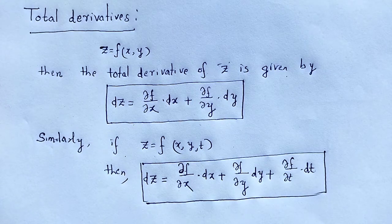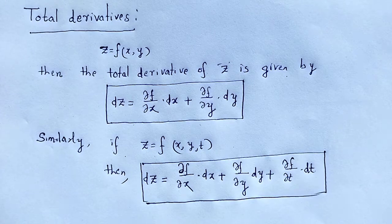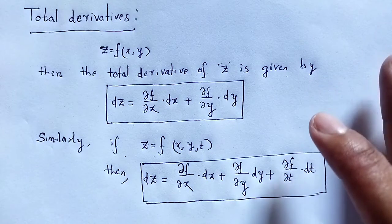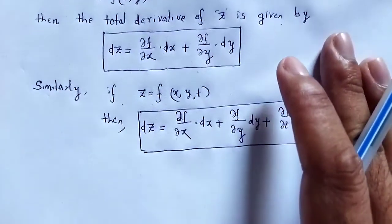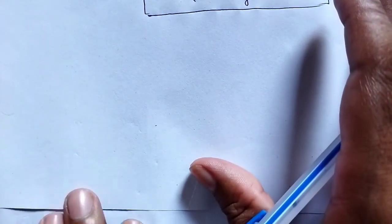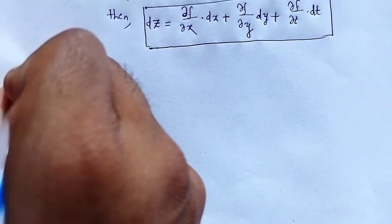Now we discuss Euler's theorem and how, by using Euler's theorem, we solve some problems related to partial derivatives. Let us discuss. First of all, we write the statement of Euler's theorem and then prove that statement.